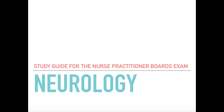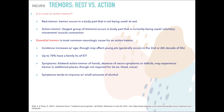First up, tremors. This is broken into two categories: rest and action tremors. A rest tremor occurs on a body part when it is not being used — it's at rest. An action tremor, which is the largest group, occurs when the body part that is currently being used has voluntary movement or muscle contraction — that is the location of the tremor.